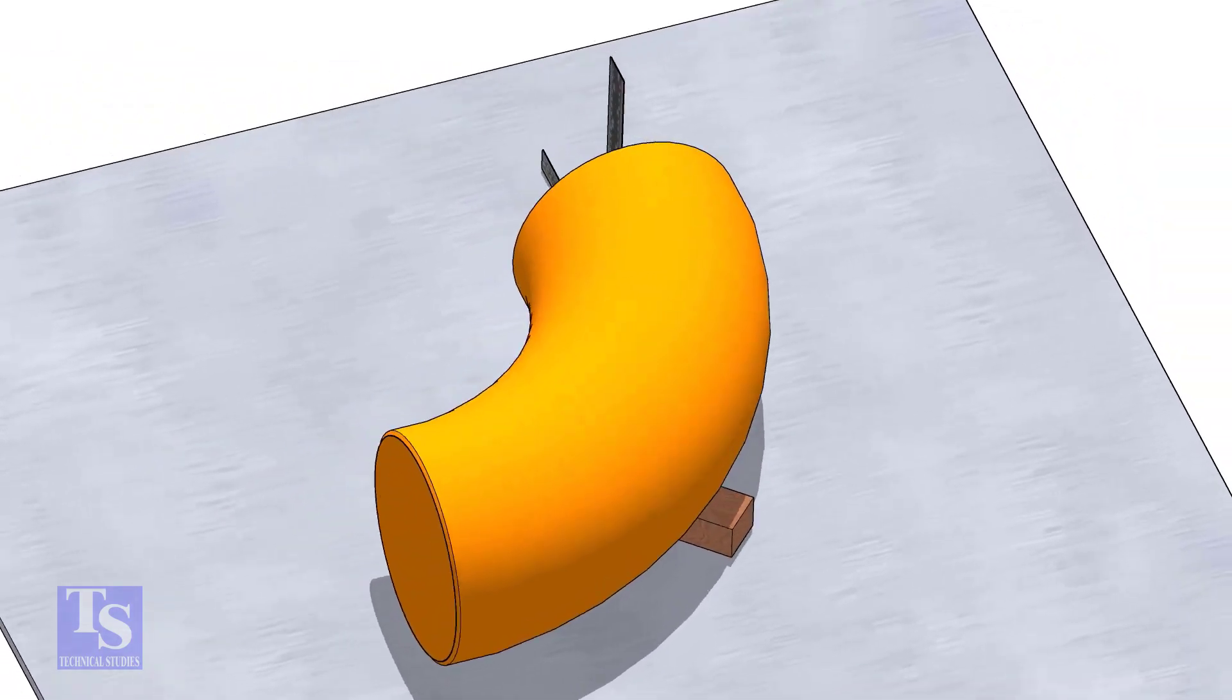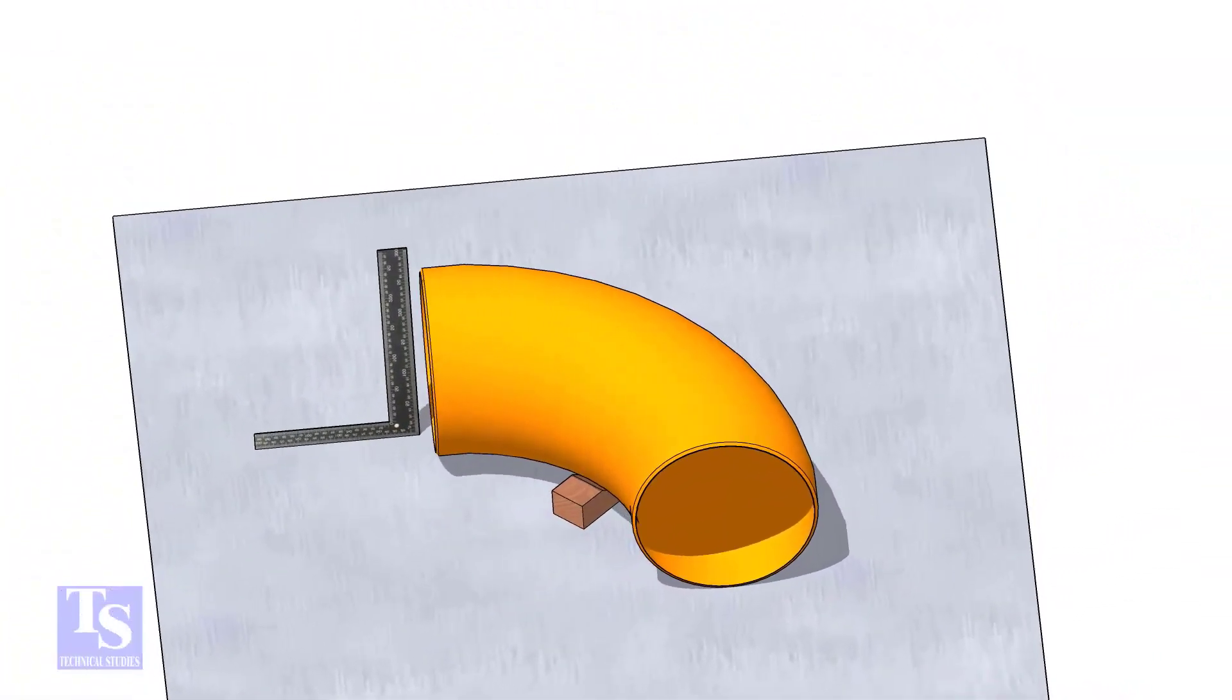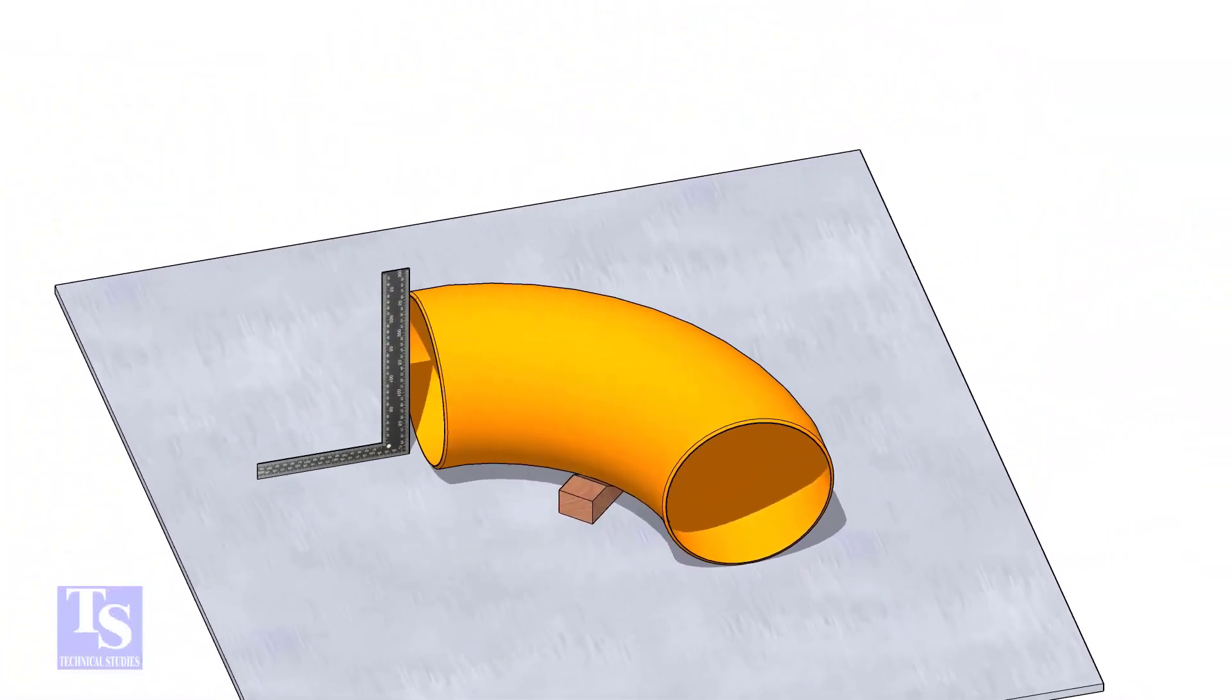Check the squareness of the face of the elbow with the plate. If necessary, put some packing below as shown.